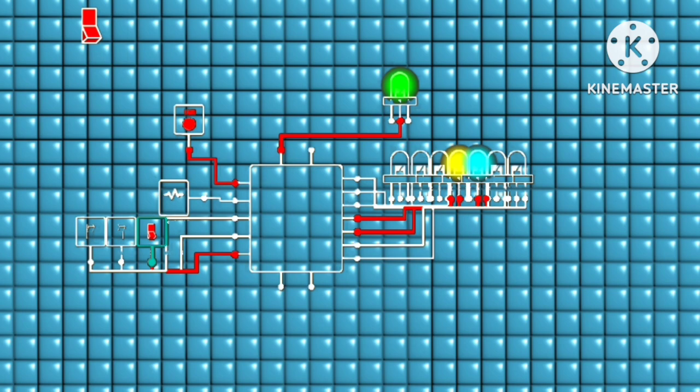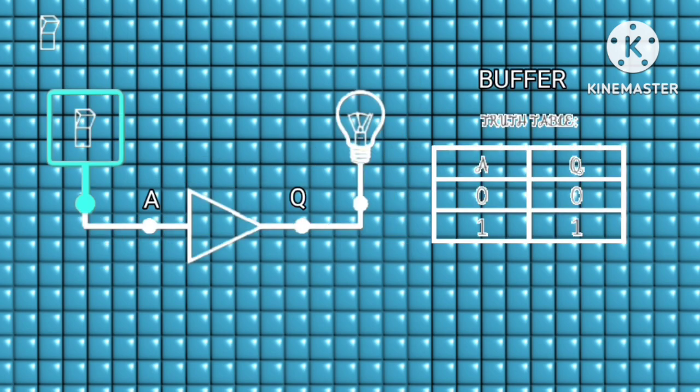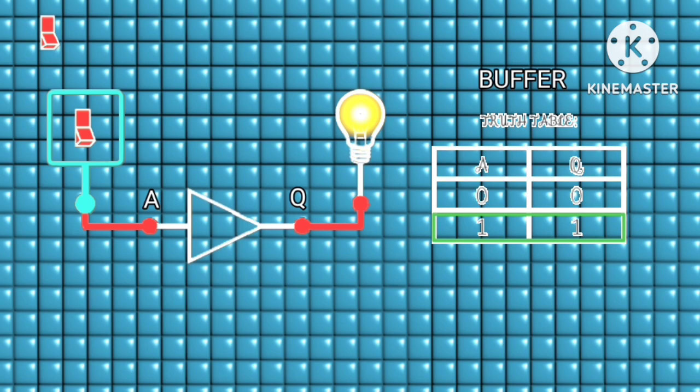The buffer: from its truth table, it only has a single input and a single output, which says the buffer output is only high if its input is high too, but goes low if the input is low.